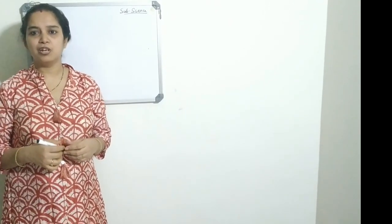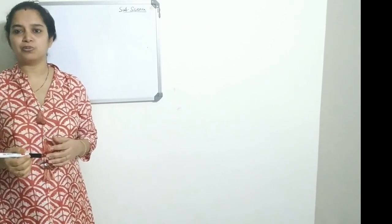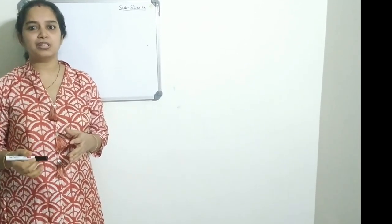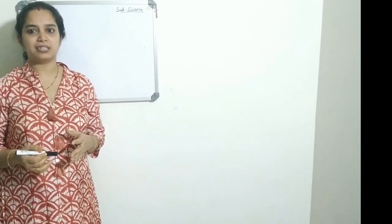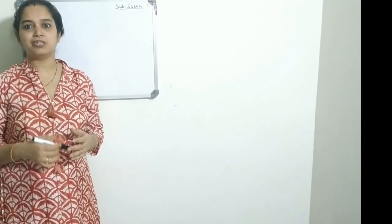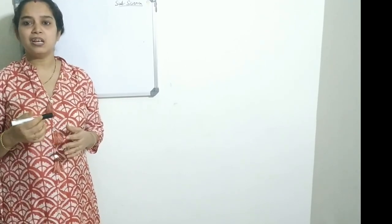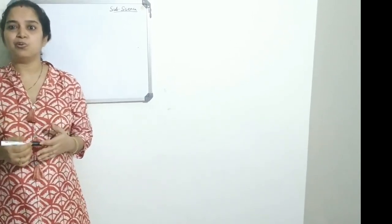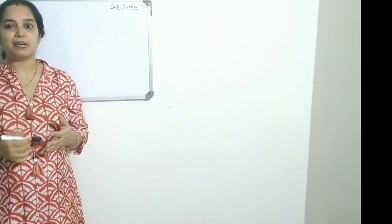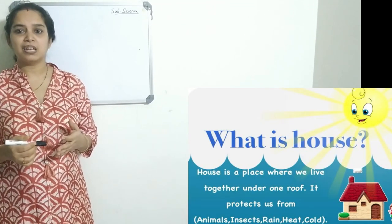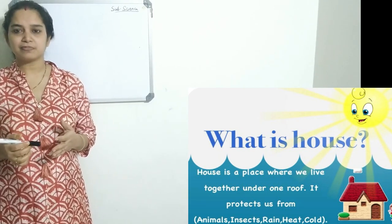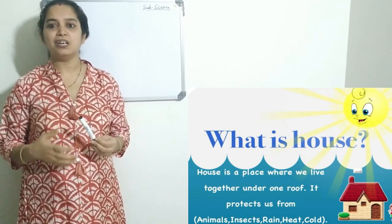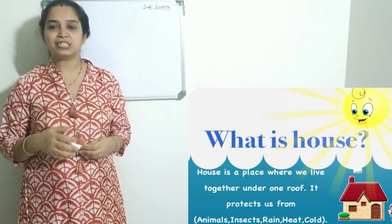I'll give an example. Rohan was playing near his house and suddenly it started raining. So what do you think Rohan might have done in that case? Yes, he rushed towards his house to escape from the heavy rain. So a house protects us from heat, cold, rain, and also from enemies, animals, and thieves. We generally build houses to live happily along with the family. They provide shelter to us.